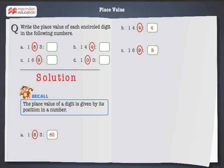Finally let's solve the last problem. Here 0 is at the tens place. Hence its place value is 0.